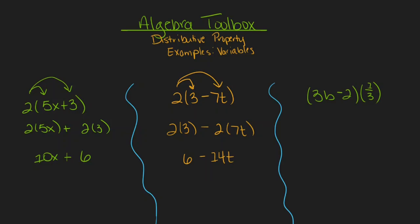Even though this one looks a little bit different, the process is going to be the same. We can distribute this one-third into both parts of our expression in parentheses. So I can think of this as 3b times one-third minus 2 times one-third.